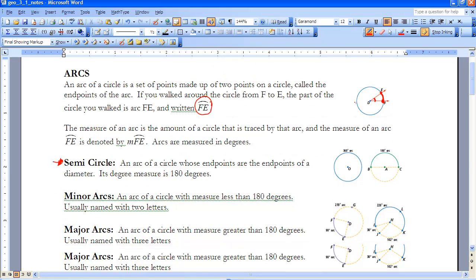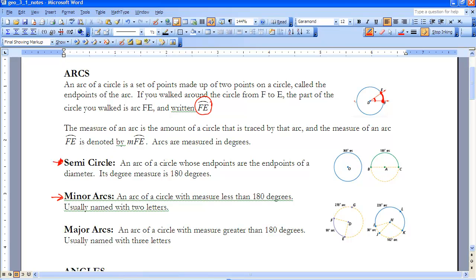Let's define the different types of arcs that we have. We have minor arcs. This arc here that I just talked about, FE, is a minor arc. It has a measure less than 180 degrees.